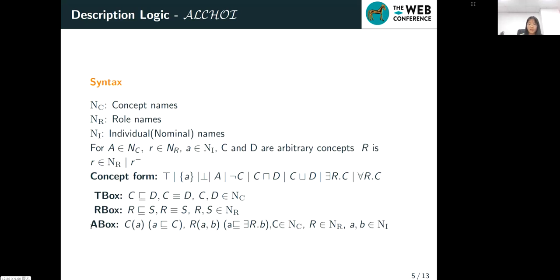In A-Box, we have like these two kinds of axioms. C of A means the individual A belongs to the concept C, which can also be written like this, a subclass of C.